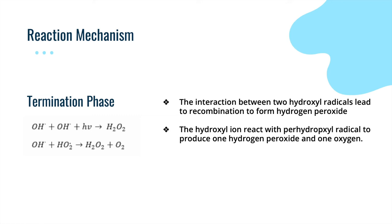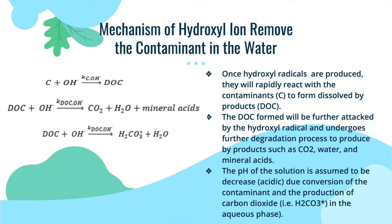For the termination phase, the interaction between two hydroxyl radicals leads to recombination to form hydrogen peroxide, and the hydroxyl radical reacts with perhydroxyl radicals to produce one hydrogen peroxide and one oxygen. Once the hydroxyl radicals are produced, they rapidly react with the contaminants to form dissolved by-products (DOC). The DOC formed is further attacked by hydroxyl radicals and undergoes further degradation to produce by-products such as carbon dioxide gas, water, and mineral acid. The pH of the solution is assumed to decrease due to the conversion of the contaminant and the production of CO₂ or H₂CO₃ in the aqueous phase.